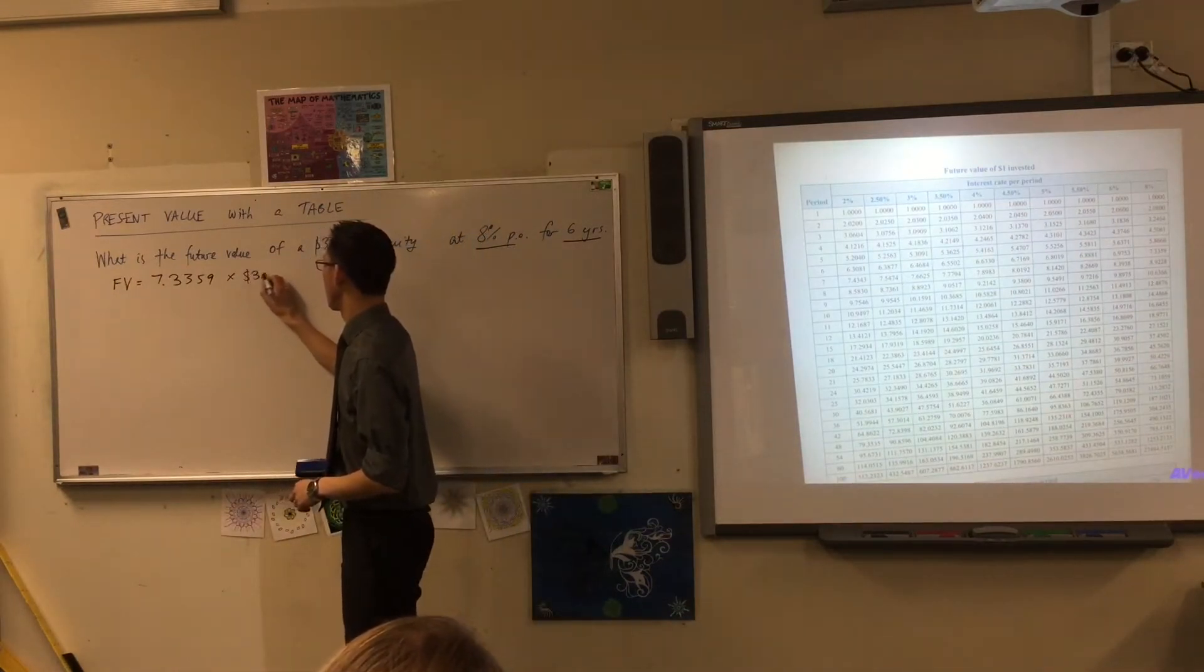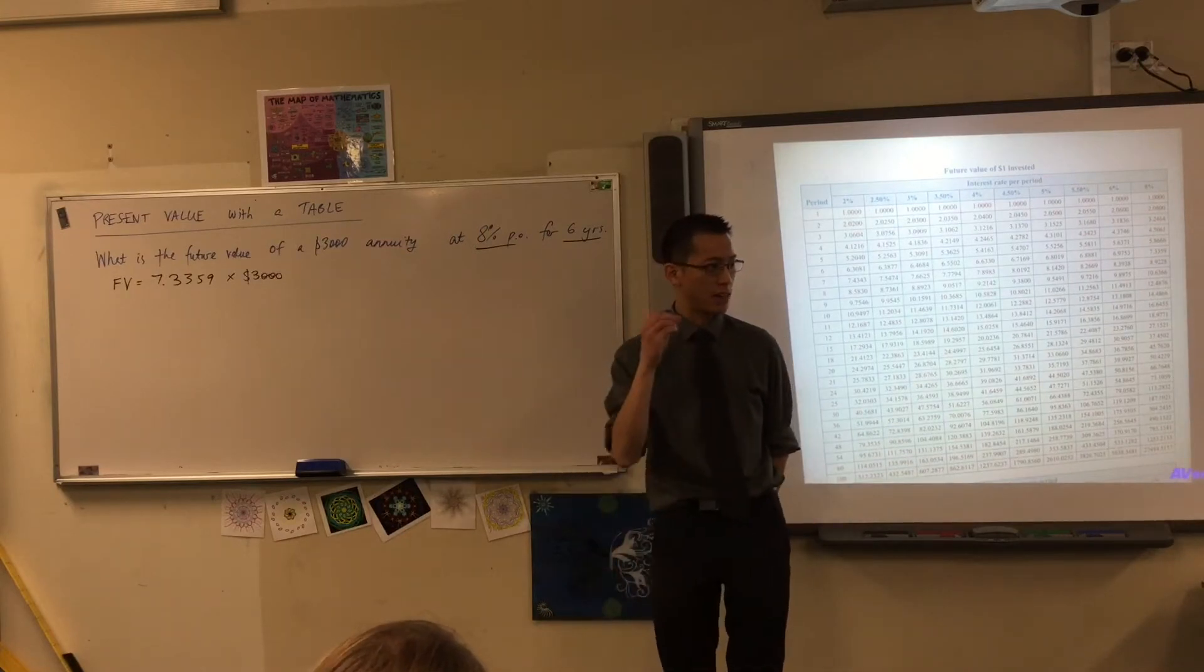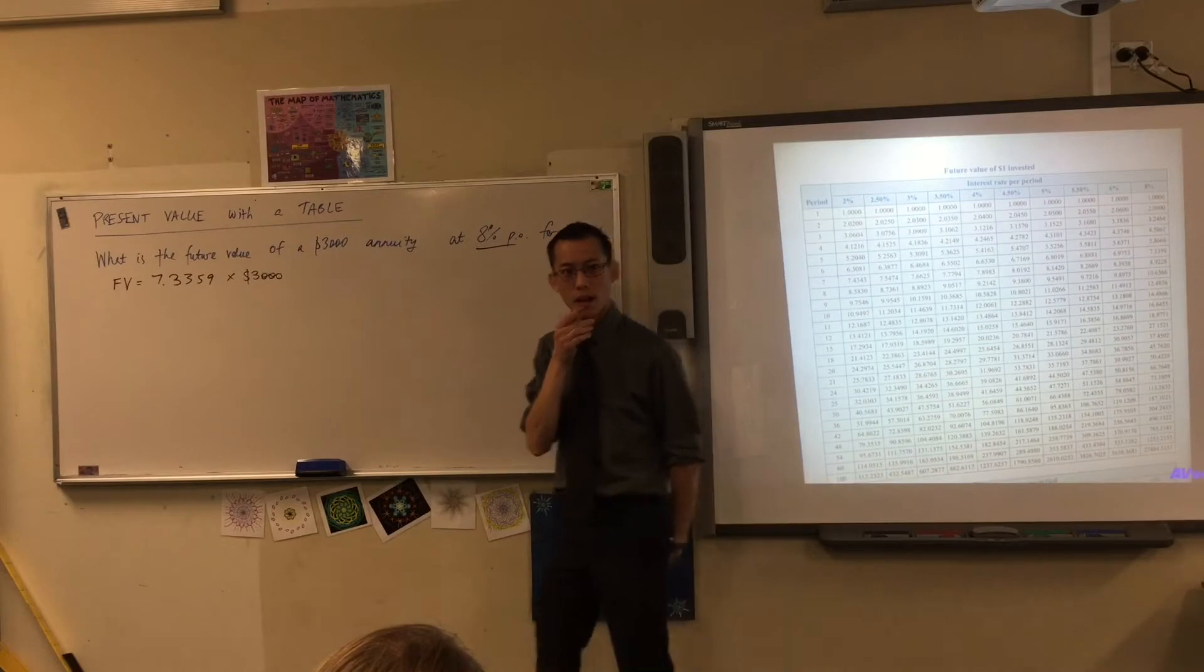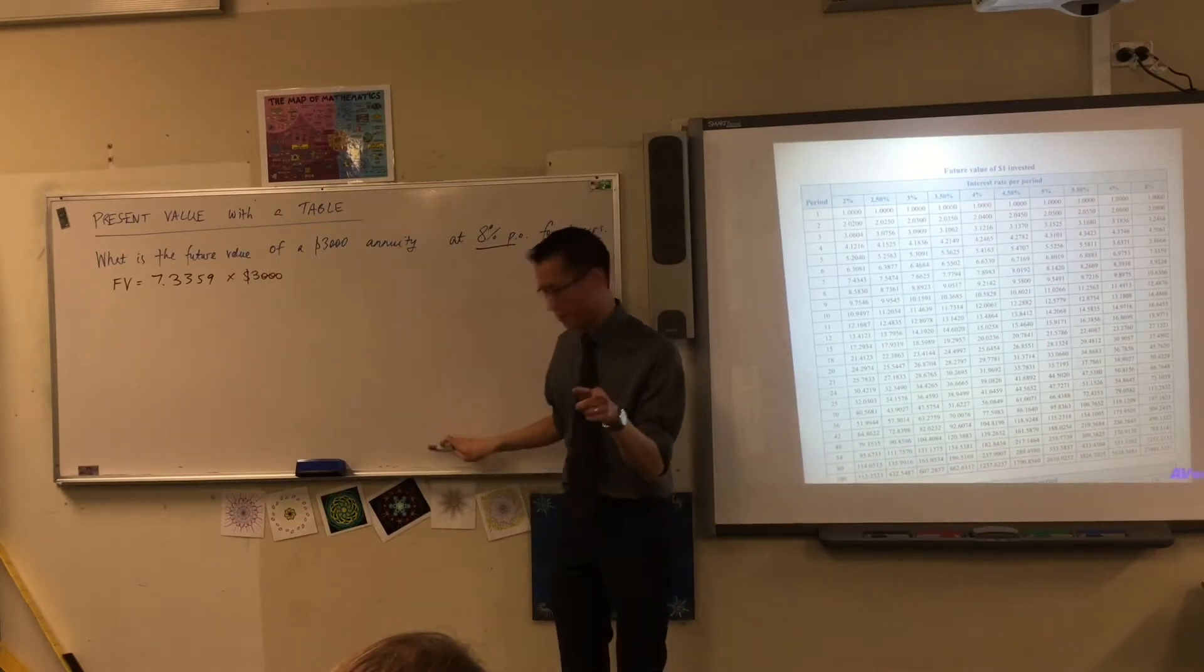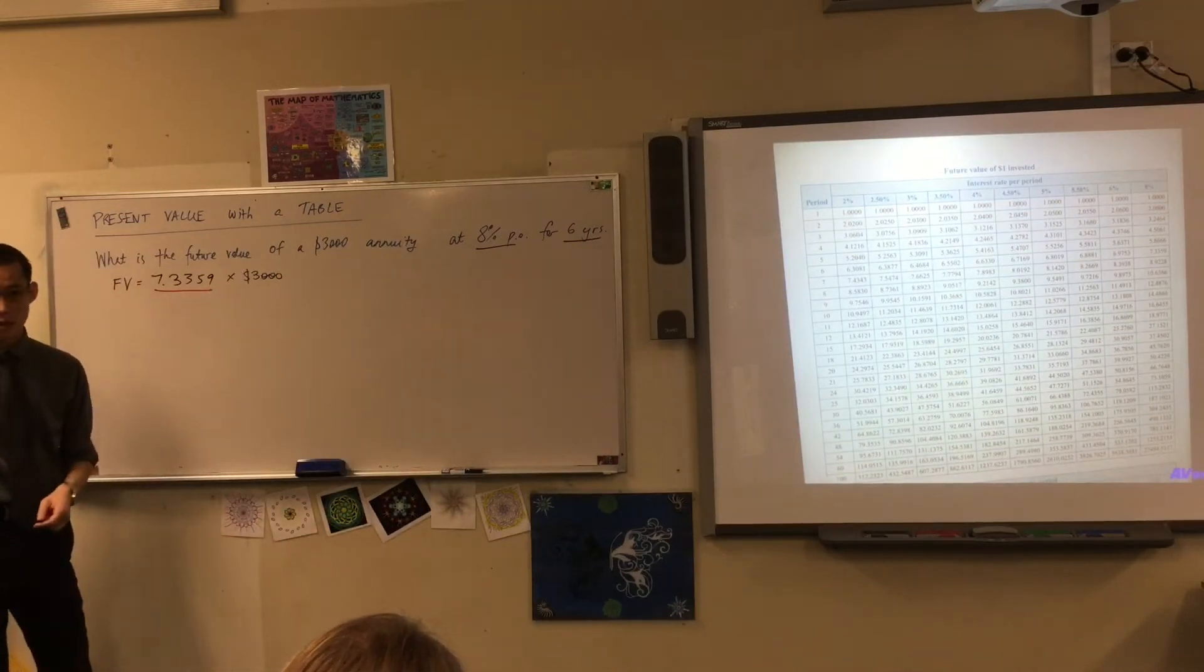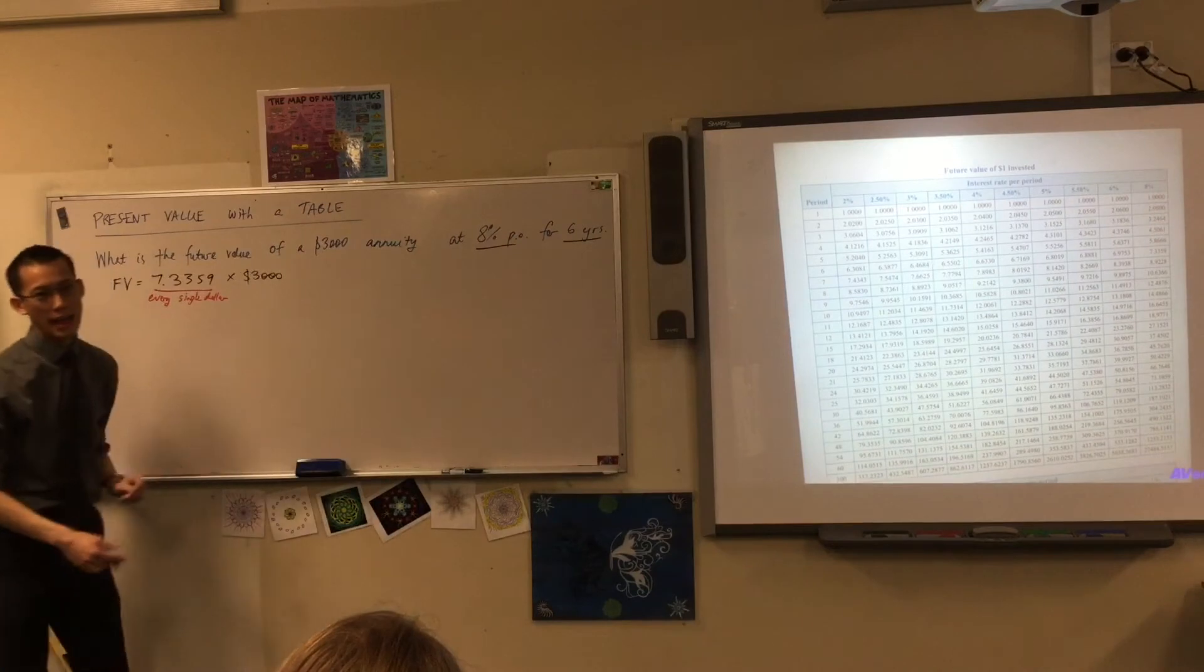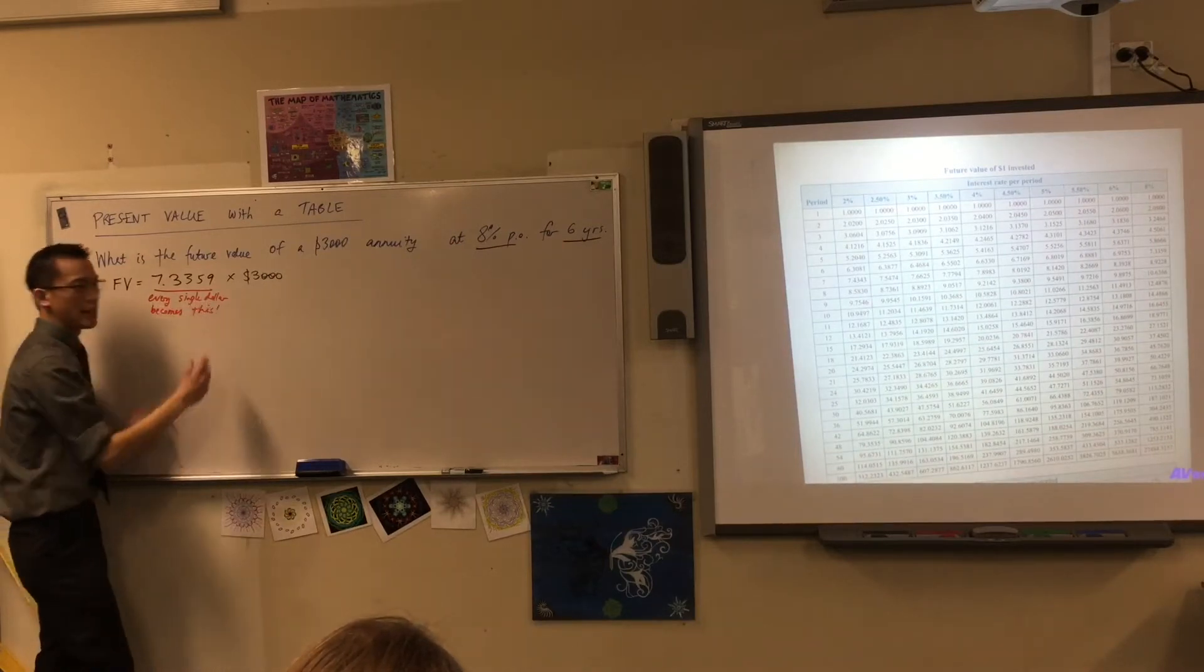I'm going to multiply by 3,000. But this is really important - I need to ask you this question. Right now it's clear because you've done this very recently, but in the future when you haven't done this for a while, you need to understand: why do we do that? Why multiplying by 3,000? Why not add to 3,000, or divide, or raise to the power of? Why is this what we're doing? The phrase that was important was that this is what every single dollar in the annuity becomes after this amount of time and at that interest rate. So every single dollar becomes this.